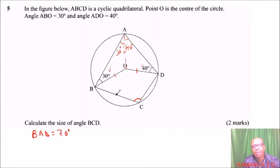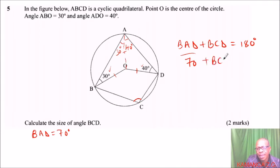Another property that we know is that the opposite angles of a cyclic quadrilateral add up to 180. That is, if we add BAD, you add to BCD, this should add up to 180. And already we know BAD. So this we have said it is 70 degrees plus BCD equals 180 degrees.